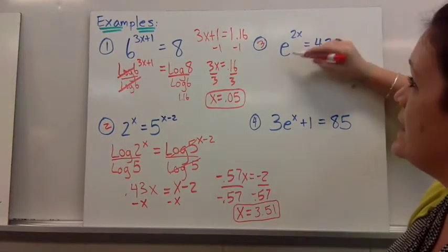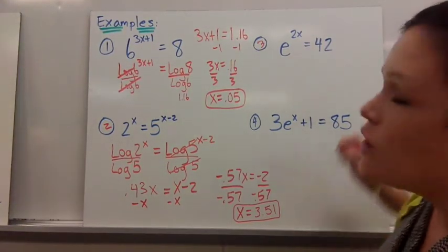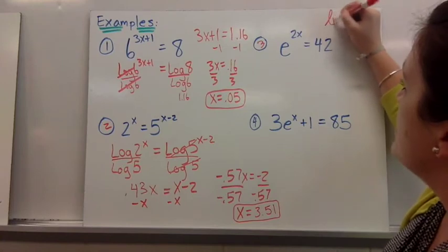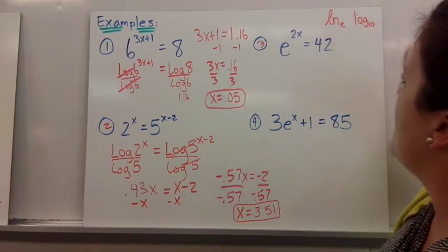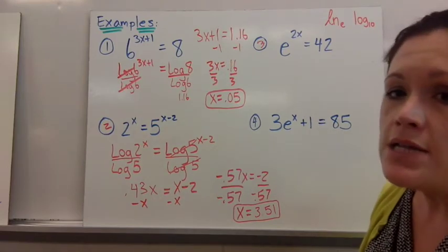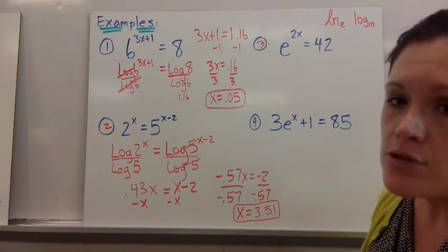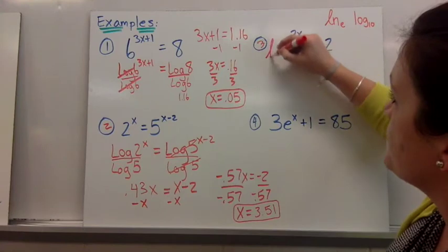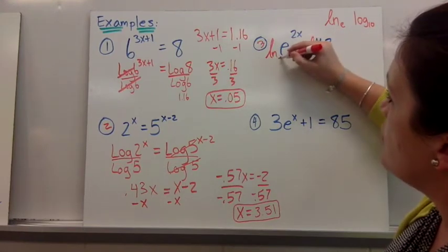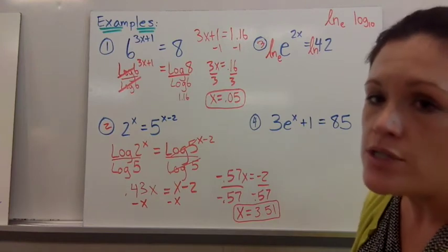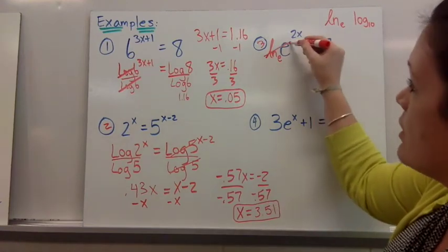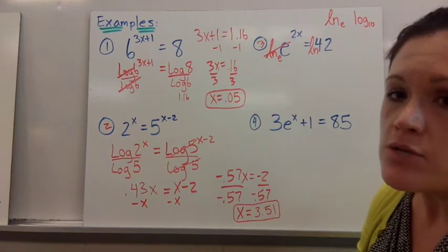So on this side if you have e as your base natural log has a base of e and log has a base of 10. So if you're given e as your base and you take natural log of both sides then what's going to happen is natural log base e of e is going to just cancel each other out. If you type that in your calculator you'll see that that just equals 1.